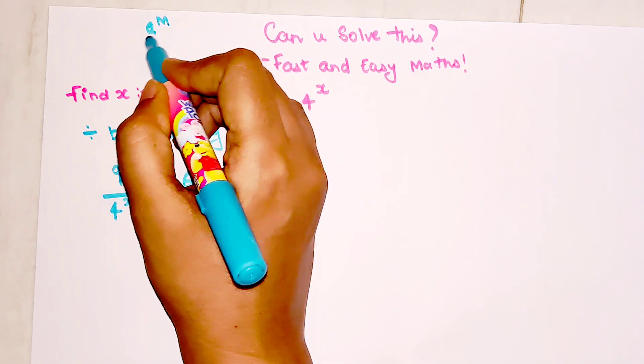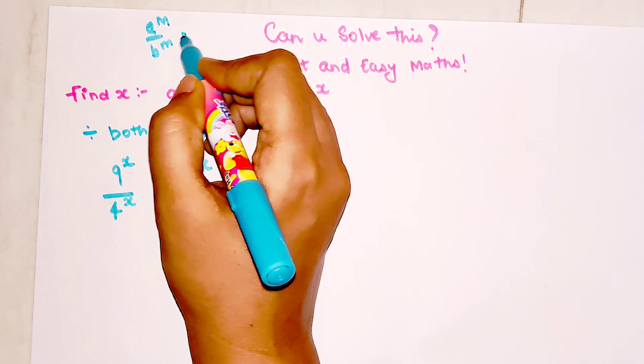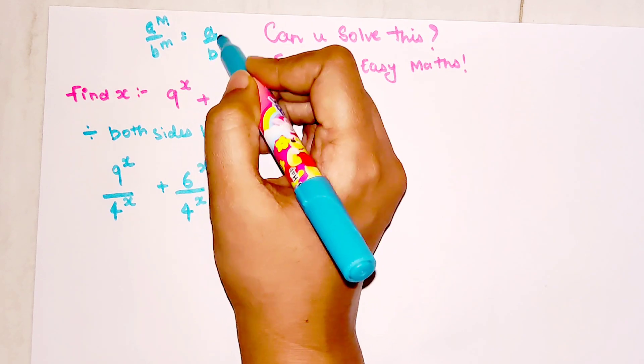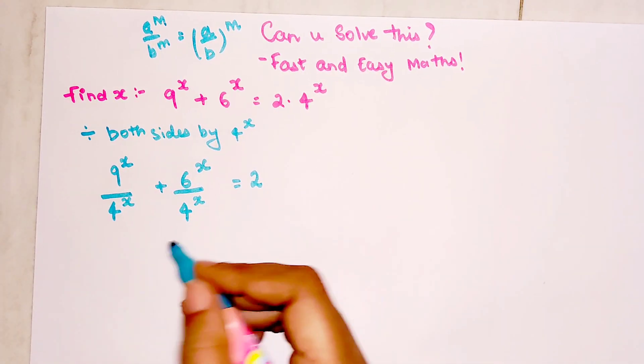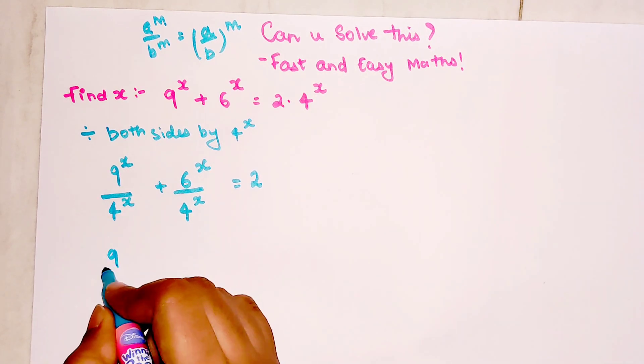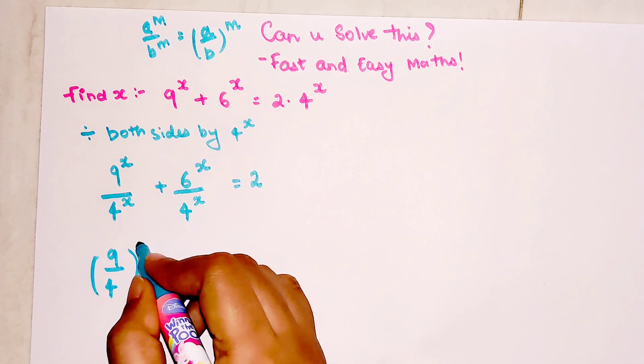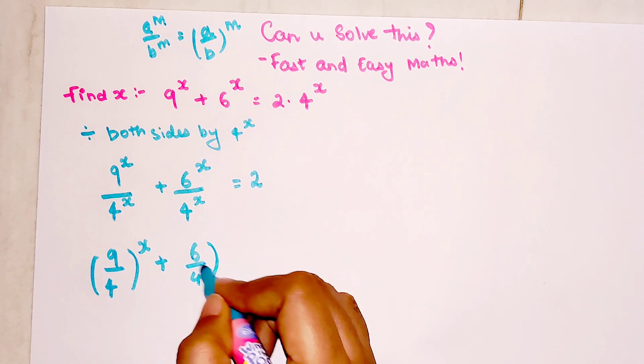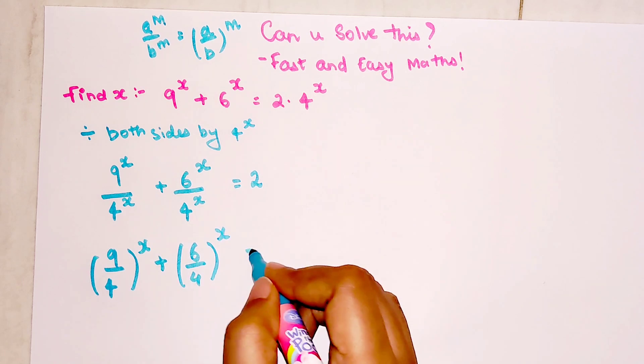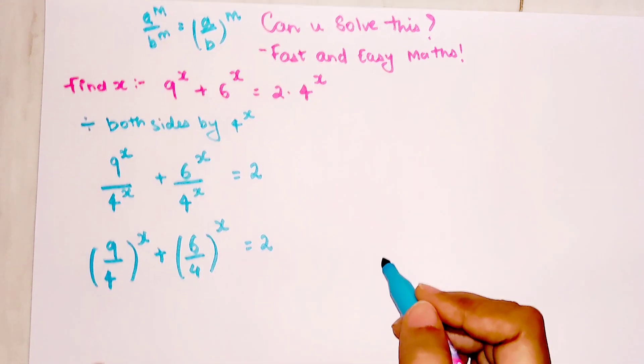Now the law of indices says that a^m/b^m can be written as (a/b)^m. So here I can write this as (9/4)^x + (6/4)^x = 2.